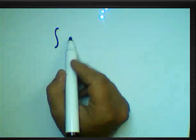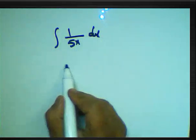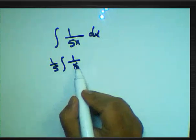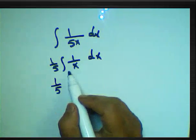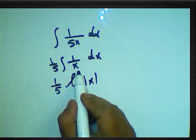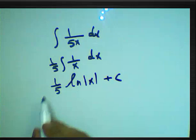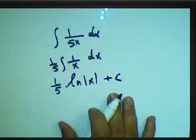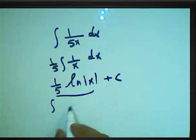The integration of 1/(5x) dx means (1/5) times the integration of 1/x dx. We have the derivative of x equal to 1, so this is ln of the absolute value of x, plus constant. The result is (1/5)·ln|x| plus constant.